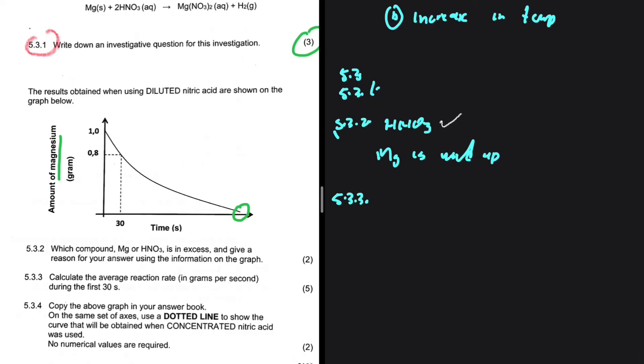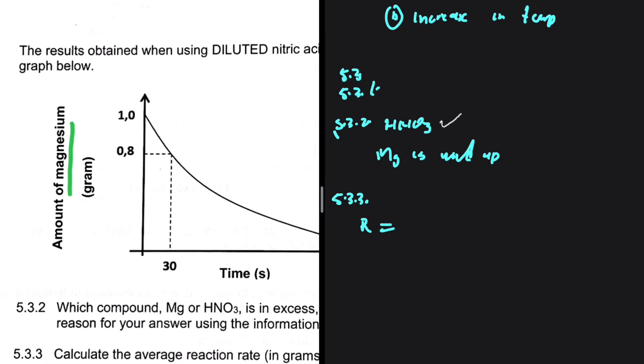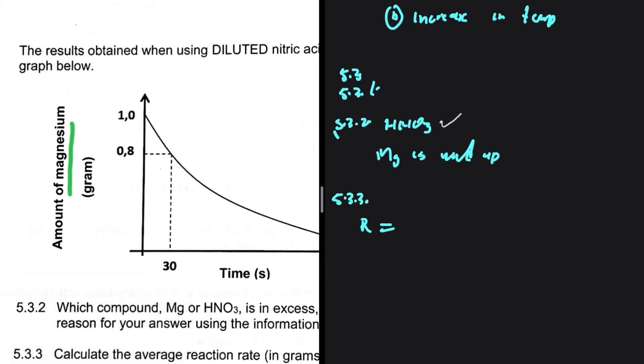Let's take a look at 5.3.3. Calculate the average reaction rate in grams per second during the first 30 seconds. So the mistake that a lot of people do, they want to calculate the rate of reaction in mole per decimeter cubed per second all the time. But this question is very specific. We want the rate of reaction in grams per second. So what are we going to say? We're going to say minus the change in mass divided by the change in time.